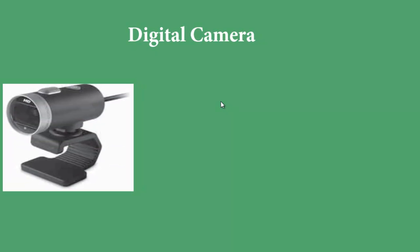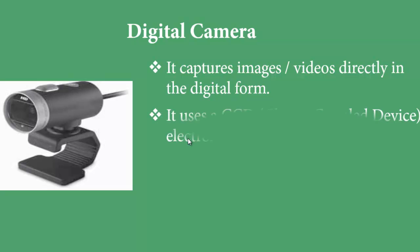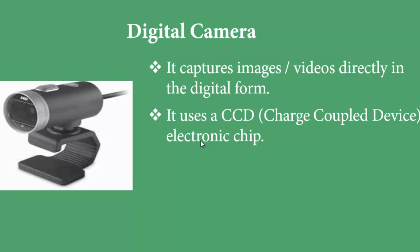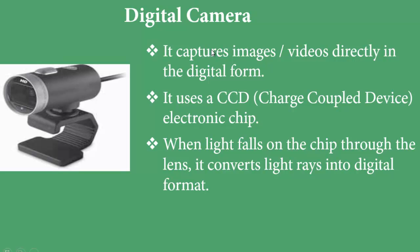A digital camera is another input device that captures images or video directly in digital form. It uses a CCD — Charge-Coupled Device — electronic chip. When light falls on the chip through the lens, it converts light rays into digital data.